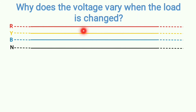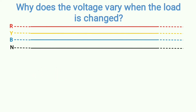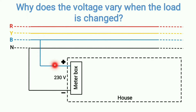This is the three-phase power system that passes through our houses and locality. These are the three phases R, Y, B, and this is the neutral. As you all know, out of these three phases, one phase and the neutral enter into our house, making a single-phase system. It enters through the energy meter box, and this is the 230-volt AC supply.